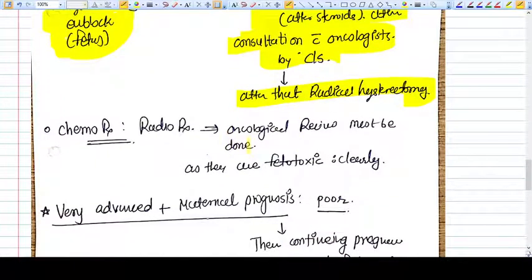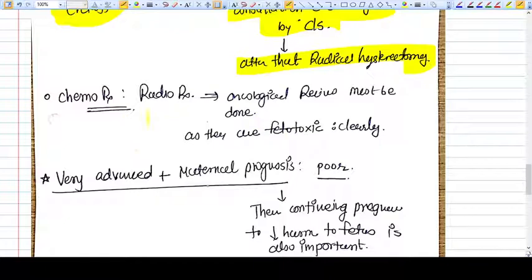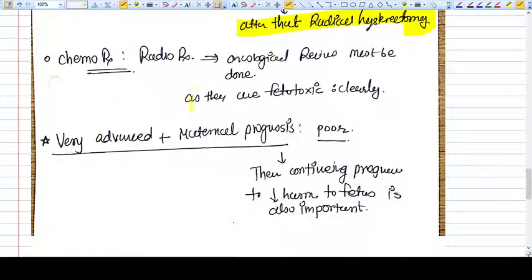Chemotherapy and radiotherapy are both contraindicated in pregnancy. However, in some books you will find that some chemotherapy agents like vincristine, vinblastine, and bleomycin have very little effect on the fetus when given in the second or third trimester.